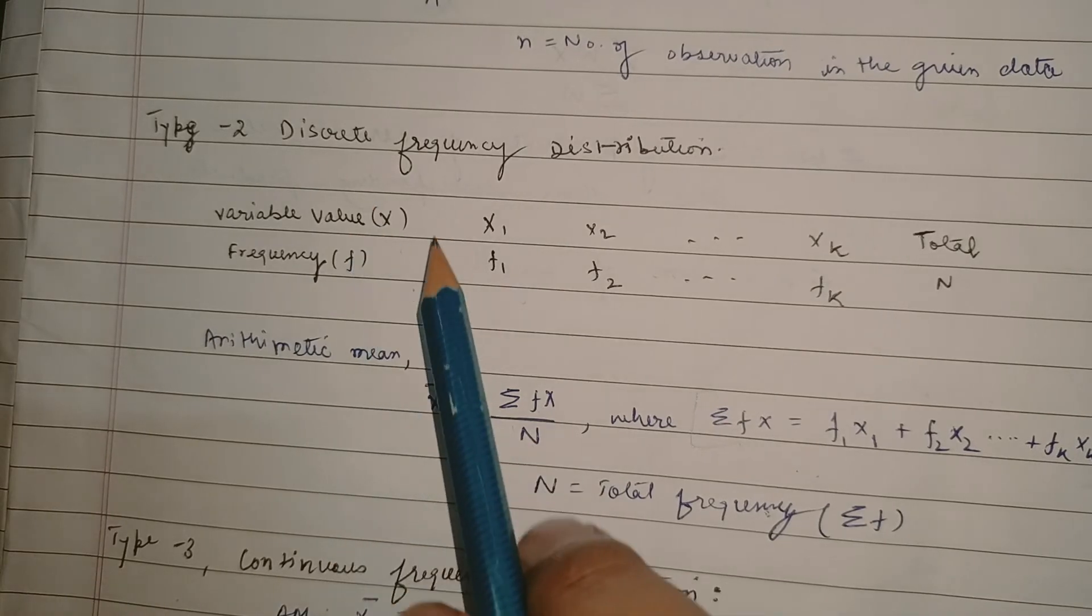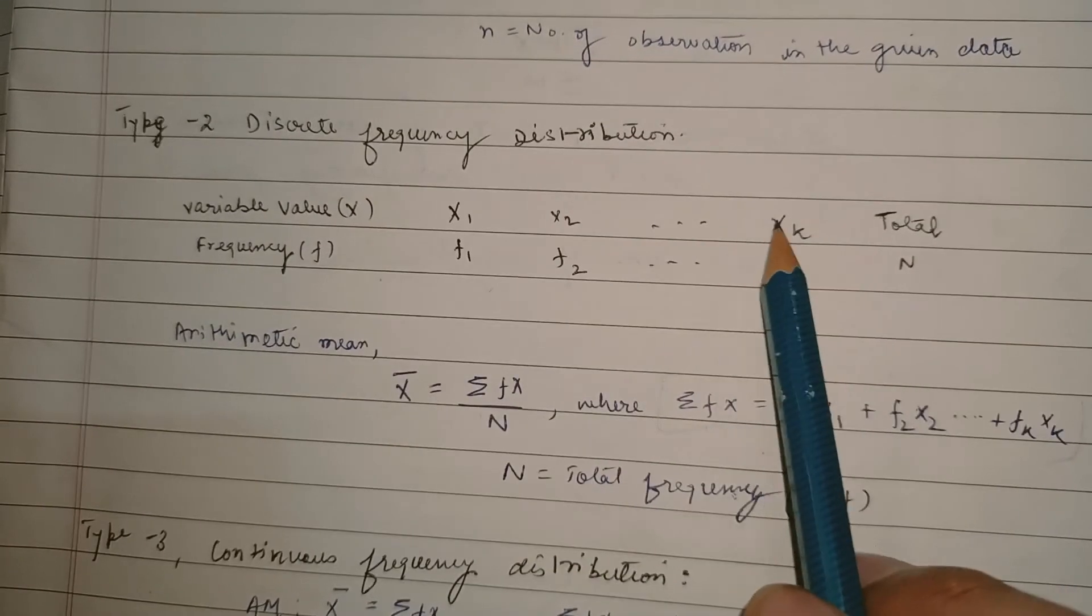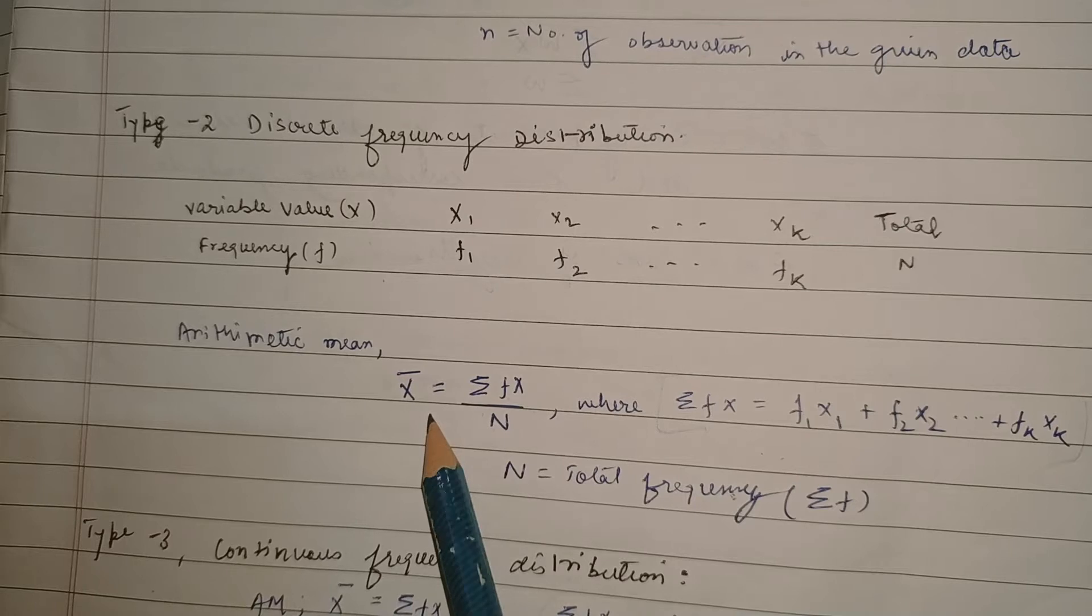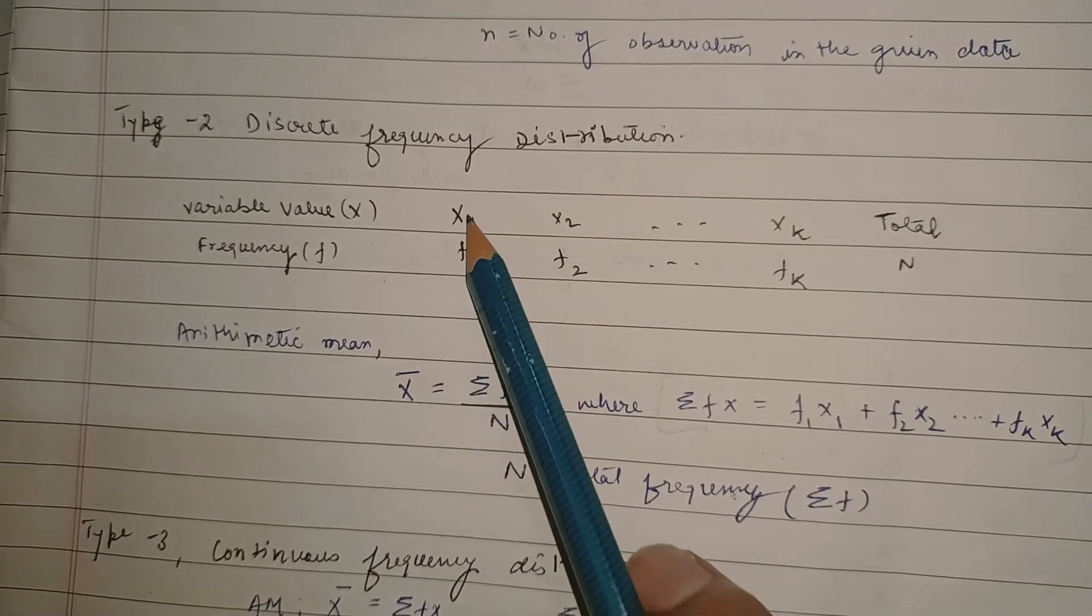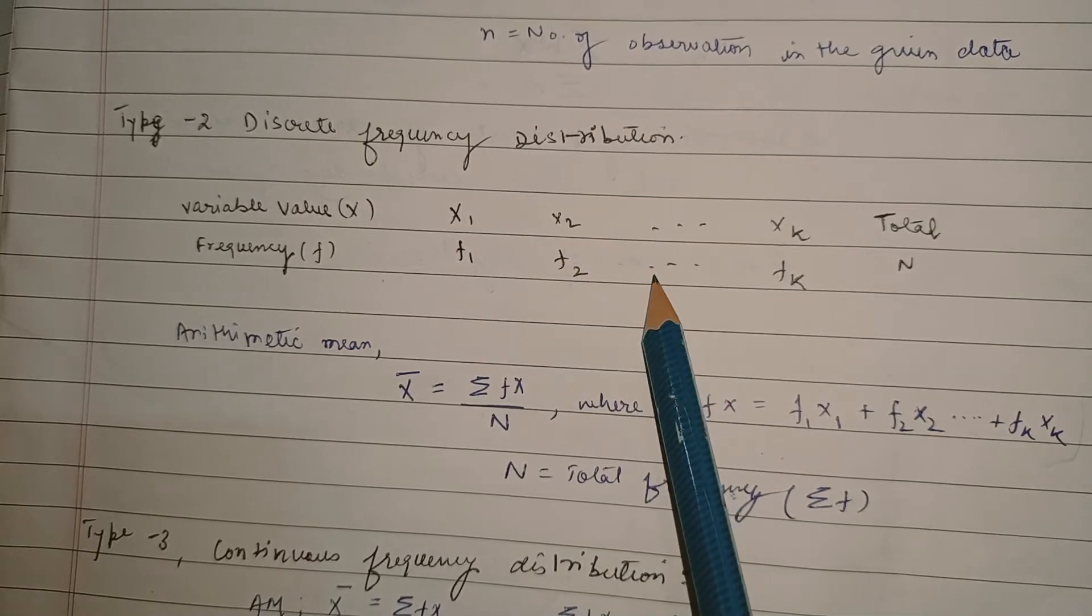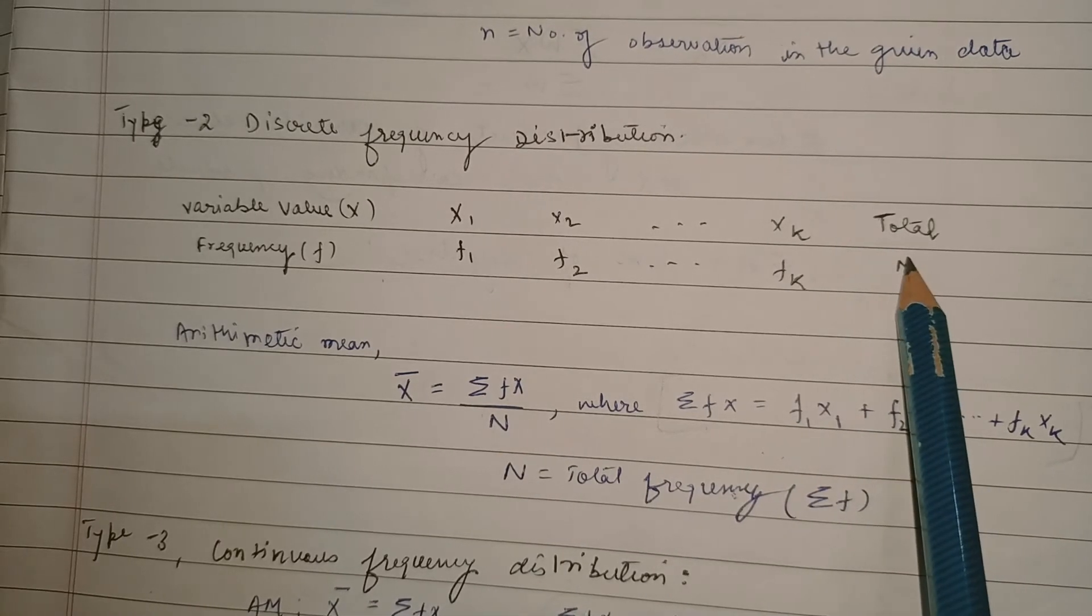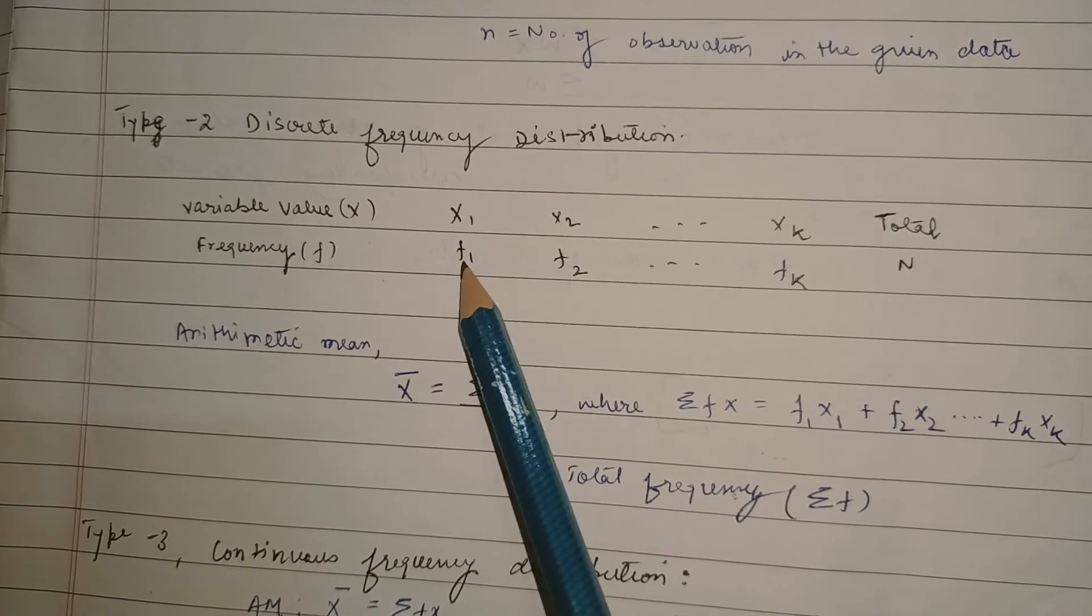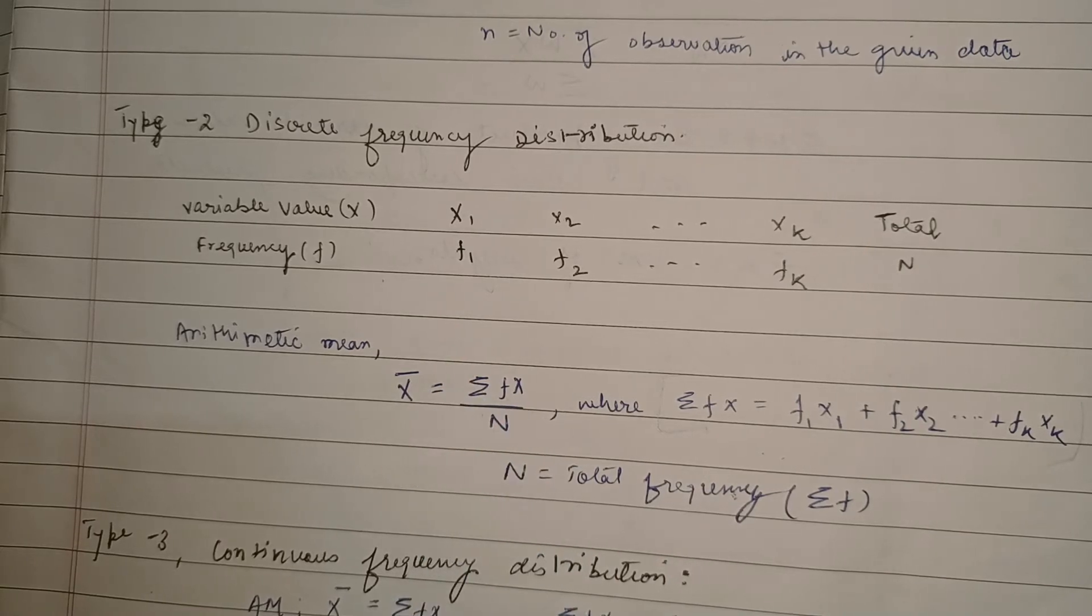The second kind of distribution given is discrete frequency distribution. In this type you would be given variable values x1, x2, x3 to xk and their frequencies f1, f2 to fk. Then arithmetic mean would be the summation of the variable values and their respective frequencies like x1 into f1 plus x2 into f2 and so on. Then divide it by total frequency, capital N, which is f1 plus f2 to fk.